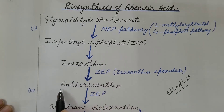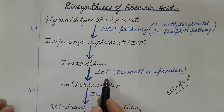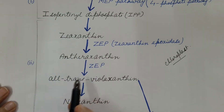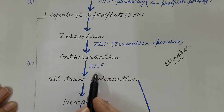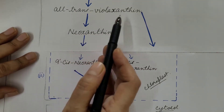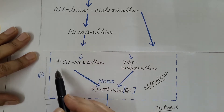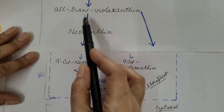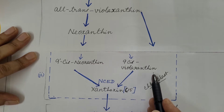Zeaxanthin is then converted into antheraxanthin, catalyzed by the enzyme ZEP — that is zeaxanthin epoxidase. Antheraxanthin is then converted into all-trans-violaxanthin; this reaction is also catalyzed by the enzyme ZEP. Now this all-trans-violaxanthin is either converted into neoxanthin, which is then converted into 9-cis-neoxanthin, or all-trans-violaxanthin is directly converted into 9-cis-violaxanthin.